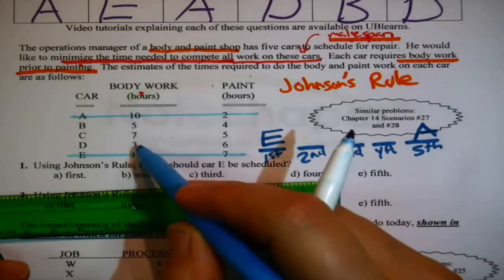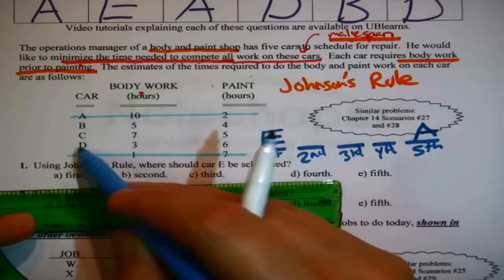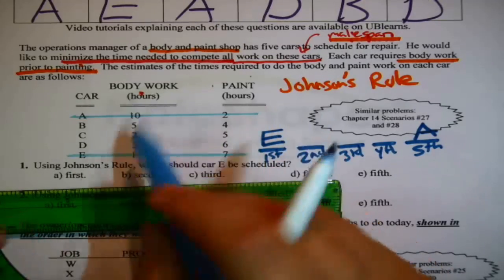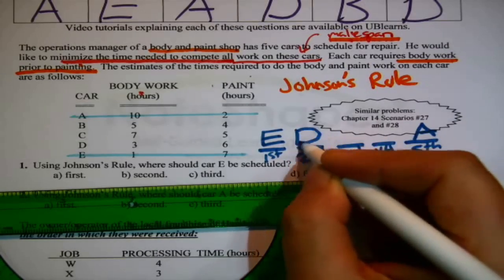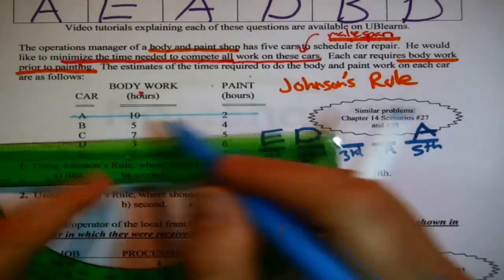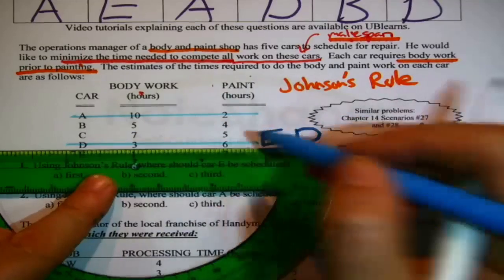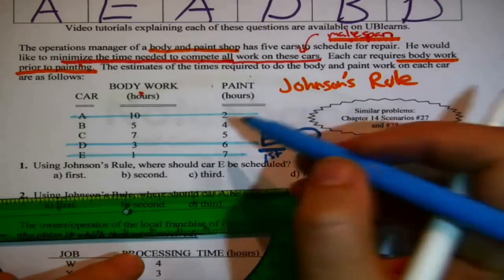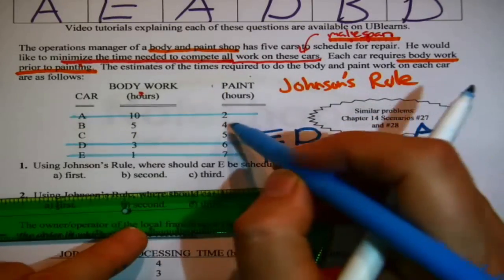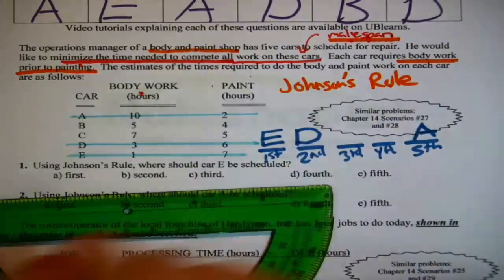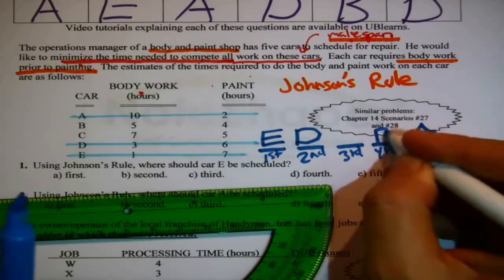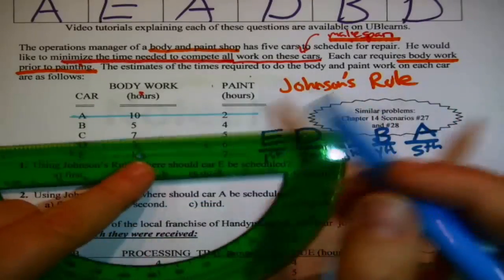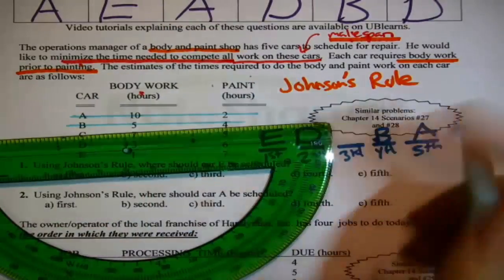Then mark A off the list. Absolute smallest number of those remaining, there's this three, belongs to D, time to schedule D. In first column, push D as far to the front as possible. Well that would be right behind E in second place. Knock it off the list. Smallest number of those remaining, here's a four, belongs to B. Schedule B in the second column as far to the back as possible. Well that is now fourth place. And then that just leaves C.